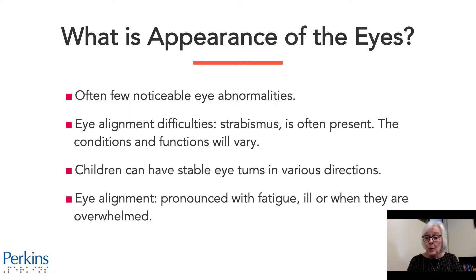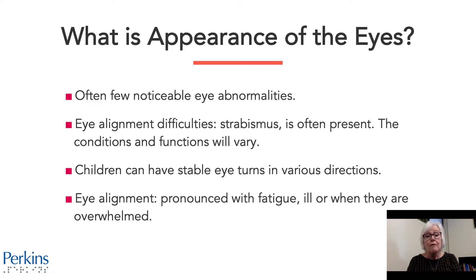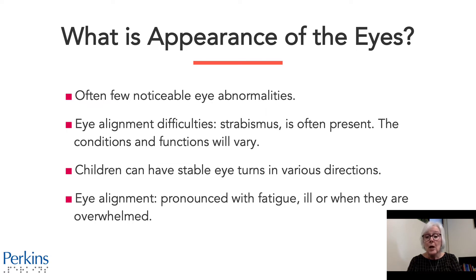So what is appearance of the eye? Children with CVI often have few noticeable eye abnormalities. But one thing that's often noticeable is their eye alignment difficulties — strabismus — and it's often present. These conditions and functions will vary in each individual child. Children can have stable eye turns in various directions, or it can increase when the child is visually fatigued, ill, or overwhelmed.